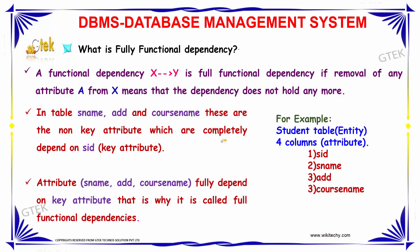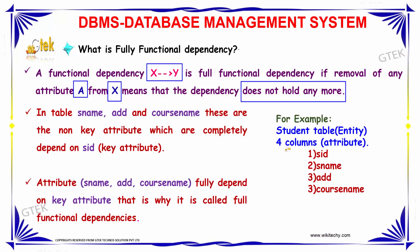Fully functional dependency is when any attribute A is removed from X, where the functional dependency is X, and Y is functionally dependent on X. If you remove an attribute A from X, then the dependency would not hold anymore. In that case, it is known as fully functional dependency.